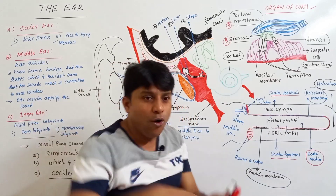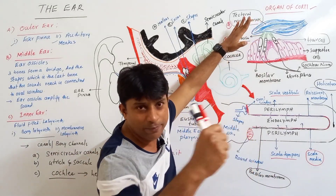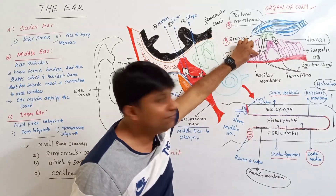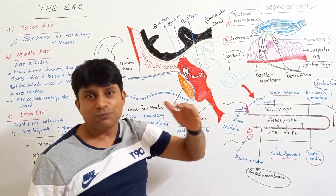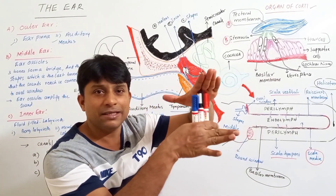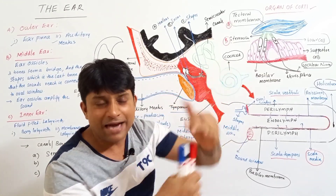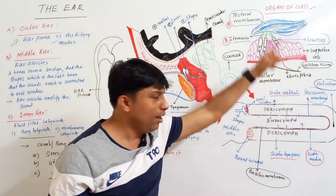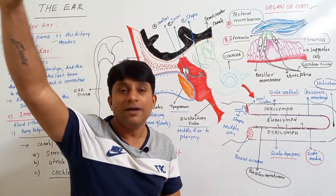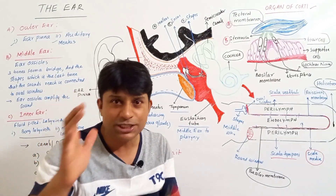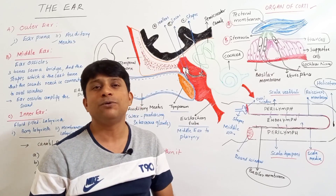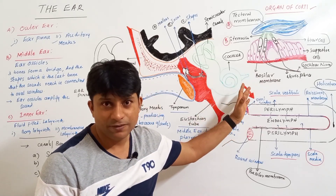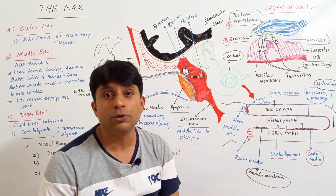Every time the stereocilia scratch the tectorial membrane — since they are in connection with it — the hair cells detect their own movement against the tectorial membrane, and due to this, impulses are generated in the nerve fibers. All these impulses are carried by the cochlear nerve to the central nervous system, and with the previous memory of the sound we are able to detect the sound. This is how the ear receives sound vibrations and enables us to hear.